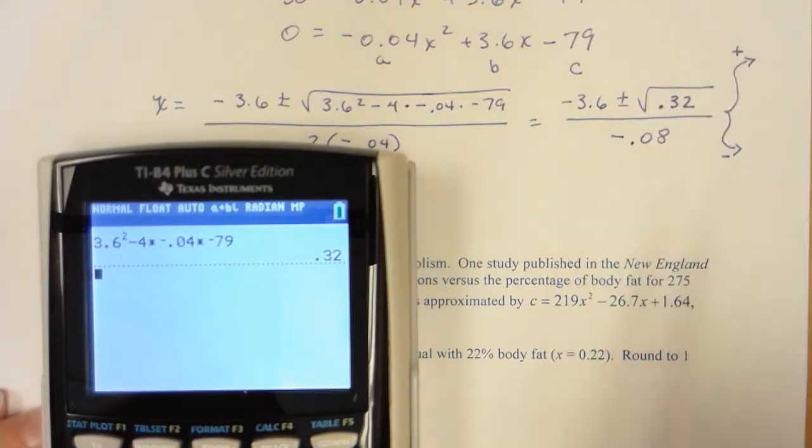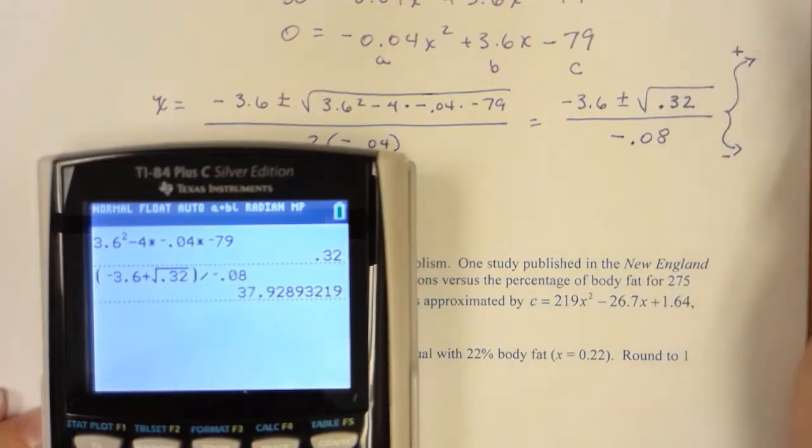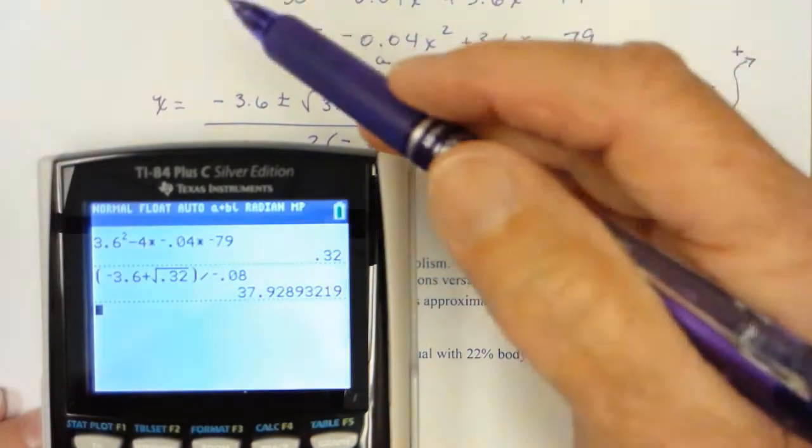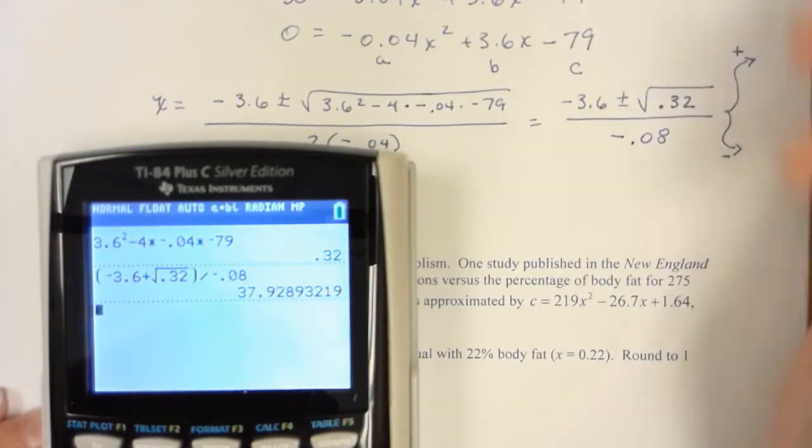So I'm going to, because this is a binomial, use parentheses: negative 3.6 plus square root, so I have to do a second x squared, 0.32, get out from under the radical in my parentheses, divide by negative 0.08. So the plus route, and it says round to the nearest miles per hour, so that would be 38.